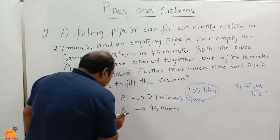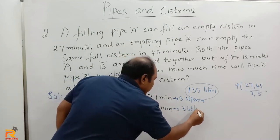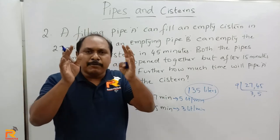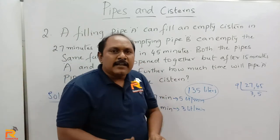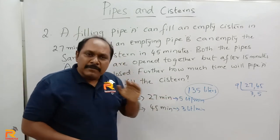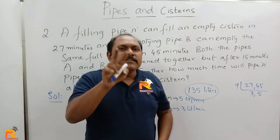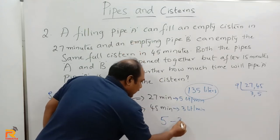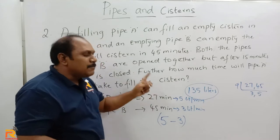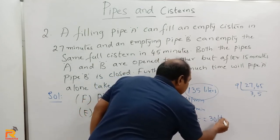The moment you get these values, solving the problem becomes easy — you can solve it orally. The total tank capacity is 135 liters. Initially, pipes A and B are both open: A fills 5 liters per minute, B takes out 3 liters per minute. So every minute, only 5 − 3 = 2 liters are filled in the tank. Both pipes are open for 15 minutes, so 2 × 15 = 30 liters are filled after 15 minutes.